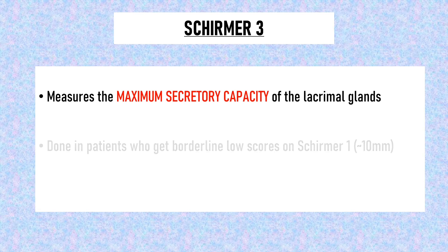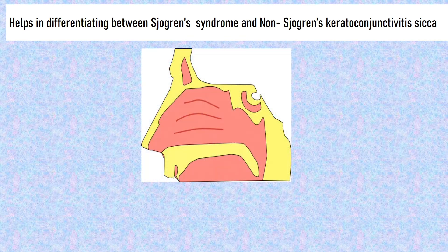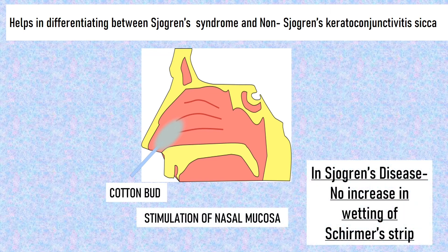Schirmer 3 is done in patients who get borderline low scores on Schirmer 1 — by borderline, we mean around 10 mm of wetting. If a patient gets a borderline low score on Schirmer 1, the nasal mucosa is stimulated to induce more reflex tearing. If there is no increase in the wetting of the Schirmer strip, or just a very small increase of less than 1 mm after nasal stimulation, it is indicative of Sjögren's disease, because Sjögren's disease destroys the structure of the lacrimal gland and reflex tears cannot be produced.